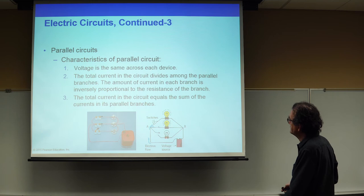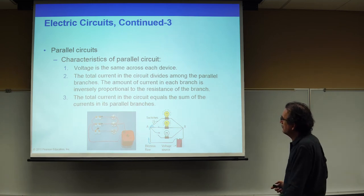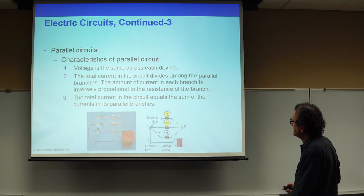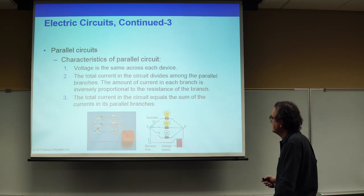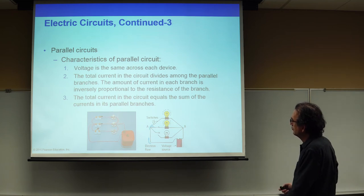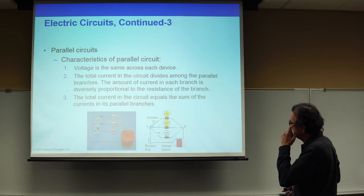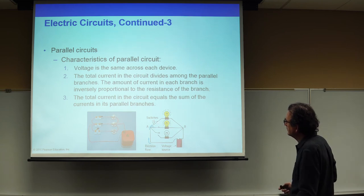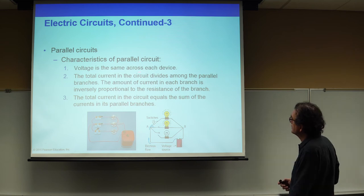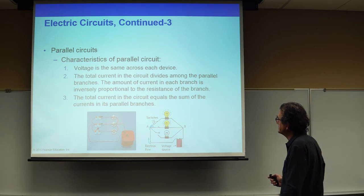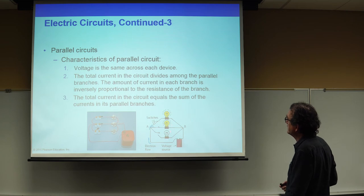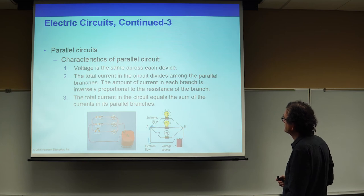So all three lights see the same voltage difference. Assuming they have the same resistance, they will all have the same current, and it won't matter whether one bulb is on or not — current will still flow through the remaining two that are on.